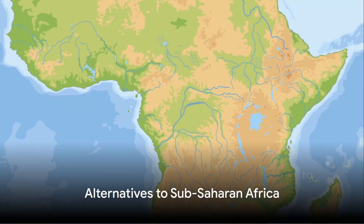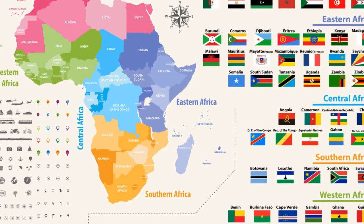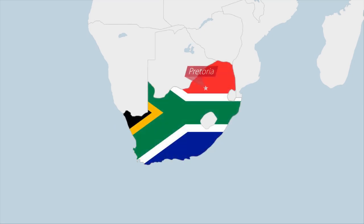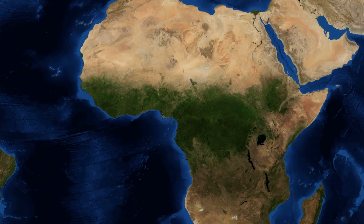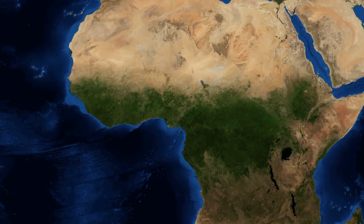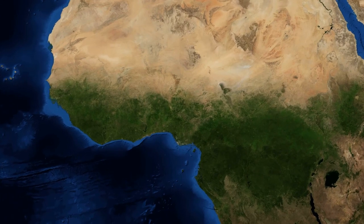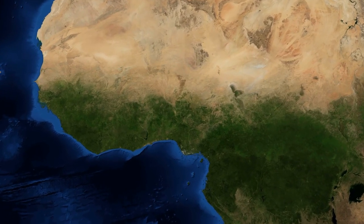So, if Sub-Saharan Africa is problematic, what are the alternatives? One approach is to refer to specific regions or countries. Africa is a vast continent with 54 countries, each with its unique history, culture, and socioeconomic dynamics. Therefore, it's more appropriate and respectful to refer to these nations by their names — like Nigeria, South Africa, or Kenya — rather than bunching them together under a broad, stereotypical term.